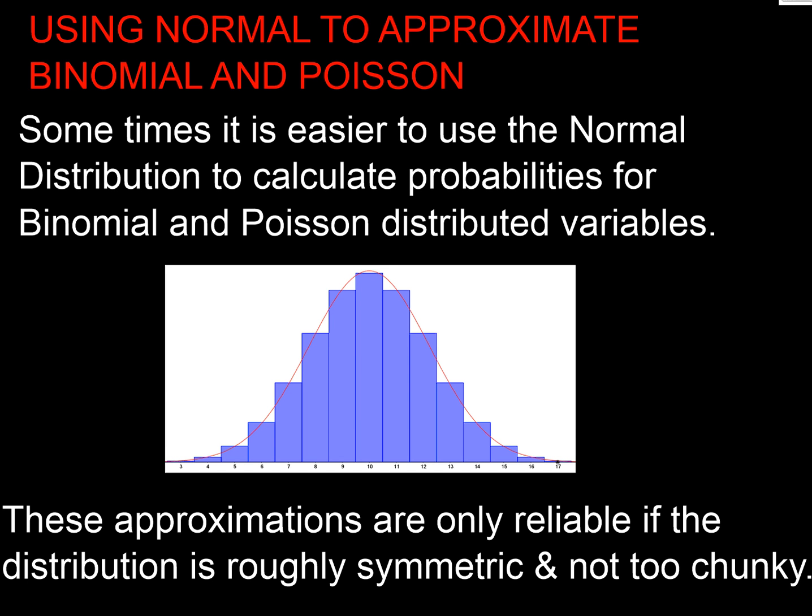Quick video on using a normal distribution to approximate a binomial or a Poisson. This is probably something that's historic before we had lovely calculators that would do all of this for us. Sometimes it's easier to use our normal distribution and tables to calculate the probabilities for our binomial or a Poisson.